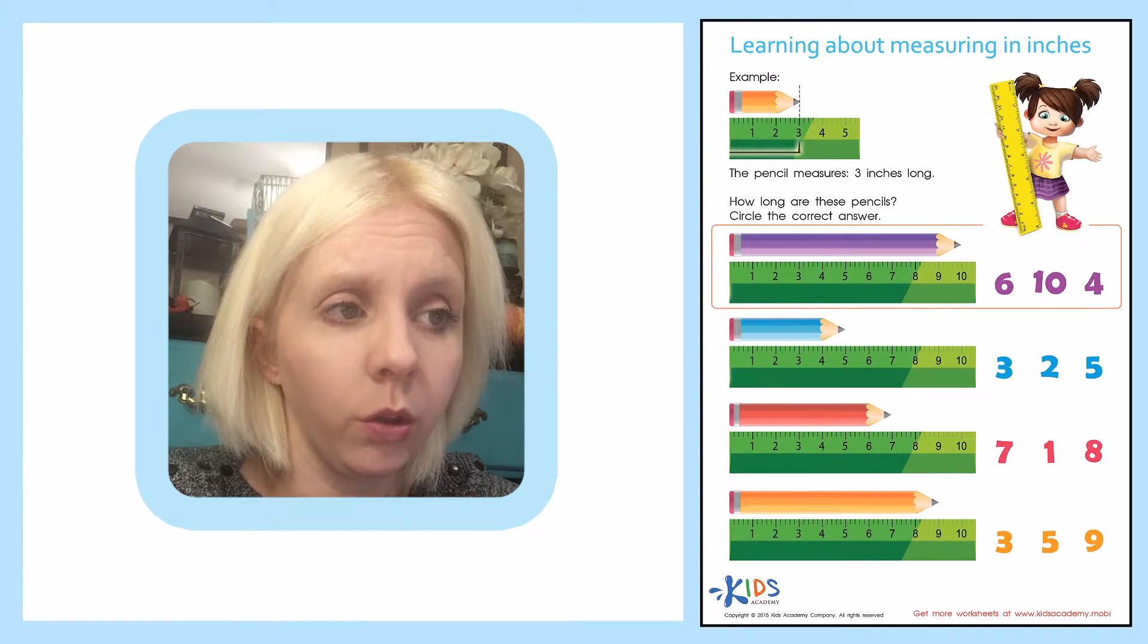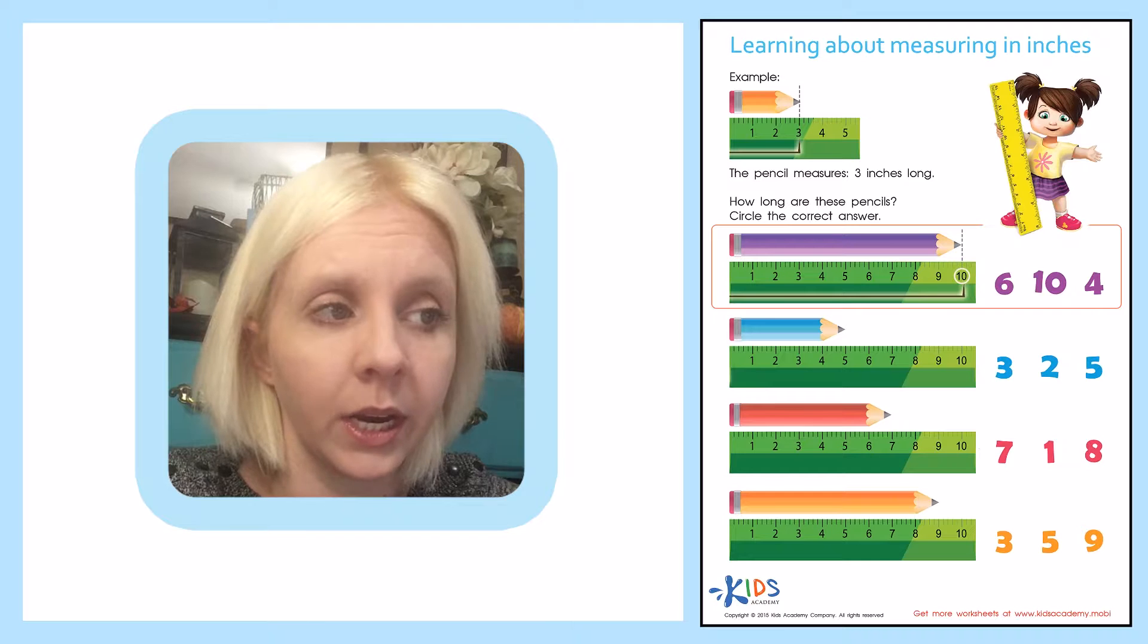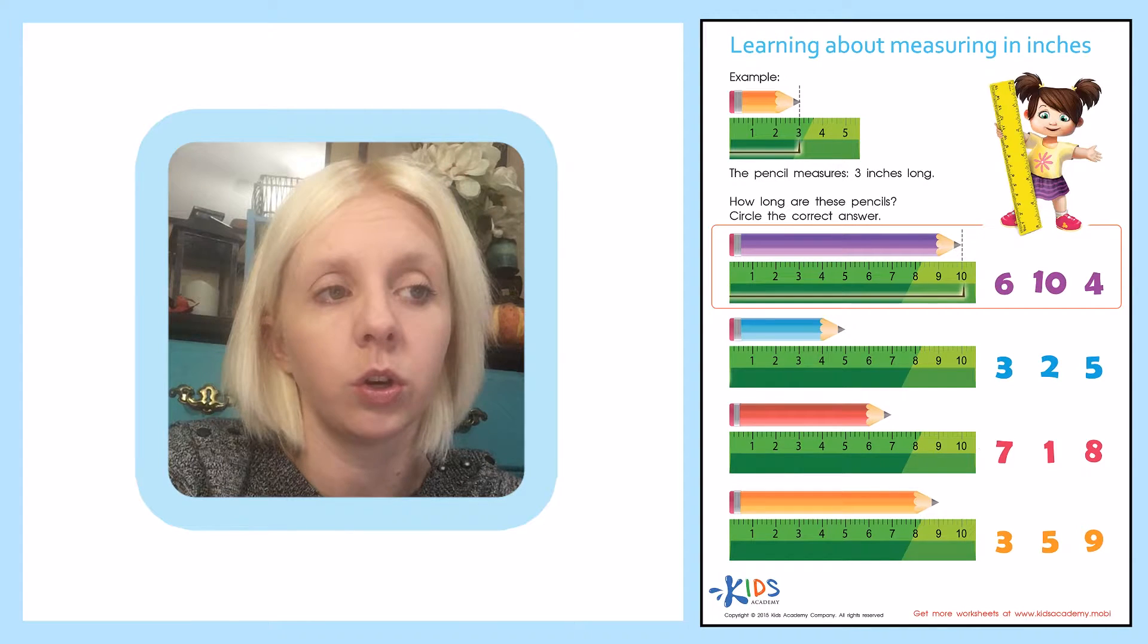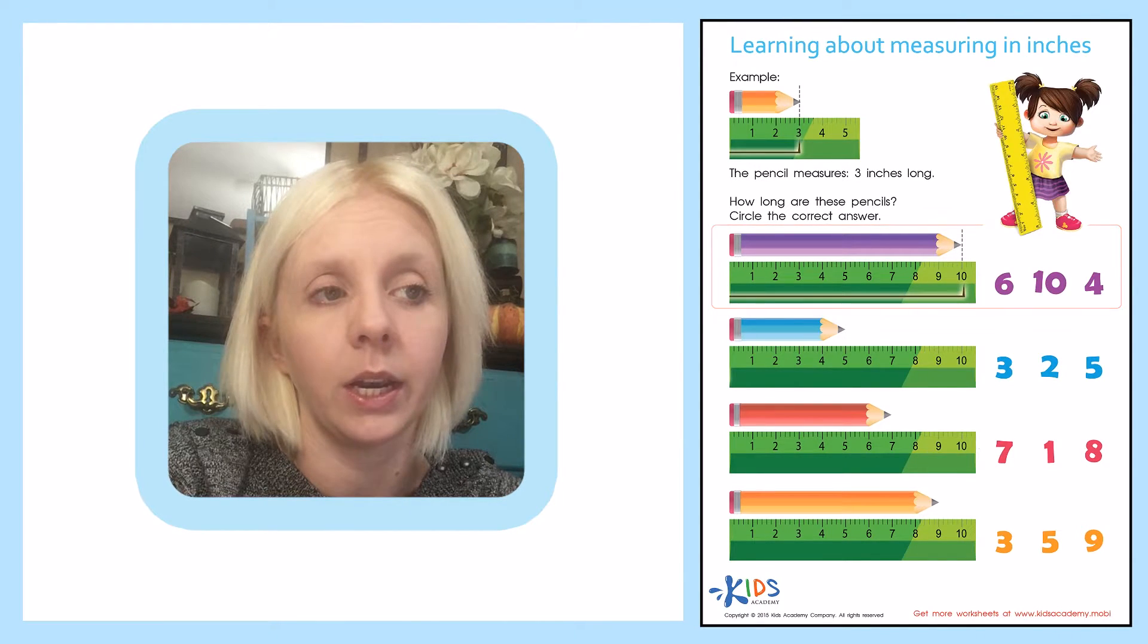And it goes all the way up to this number right here. Let's go ahead and count this really quick. We've got one, two, three, four, five, six, seven, eight, nine, ten. So ten is the correct answer. So I'm going to circle ten right here.